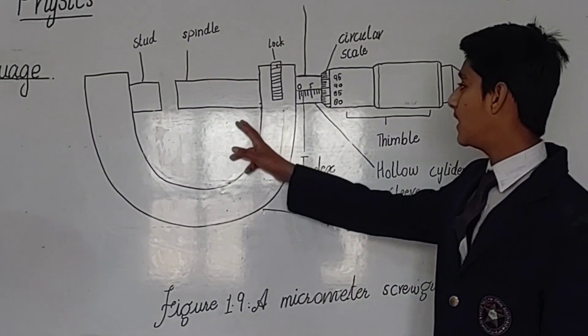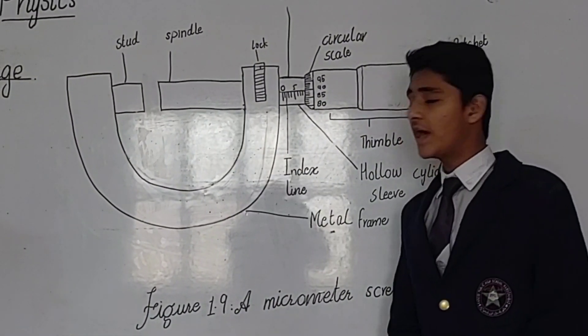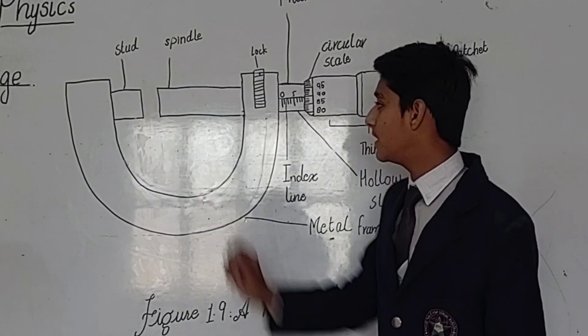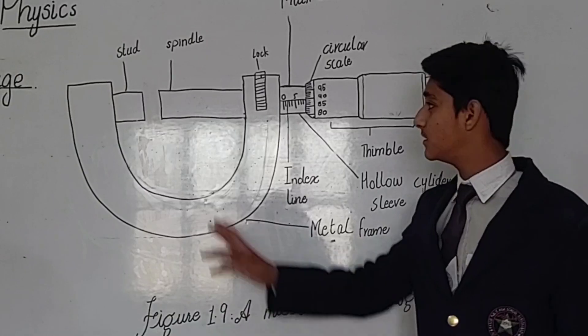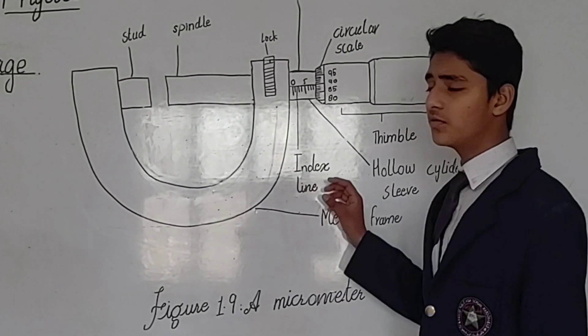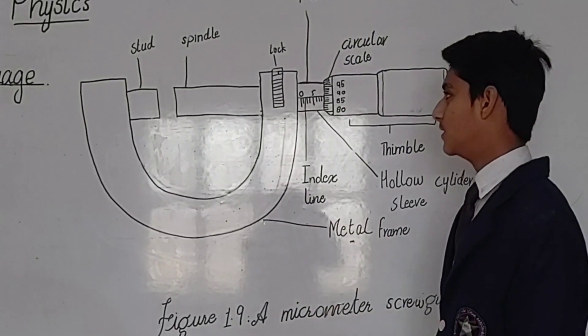The lock catches the spindle so the spindle does not move. When we unlock it, the spindle moves. The distance between the spindle and stud is 1 mm and this distance is known as pitch. The least count of the screw gauge is pitch divided by the number of divisions on the circular scale.